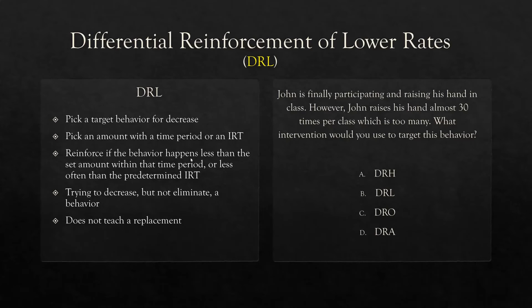DRL is very similar to DRD. The difference is we're trying to decrease but not eliminate. In our eating example, are we trying to eliminate eating? Of course not — we need them to eat, we just need them to eat at a lower rate. DRL also does not teach a replacement. You can think of DRO living by itself, DRA and DRI together, and DRH, DRD, and DRL in their own camp, with DRD and DRL being quite similar.